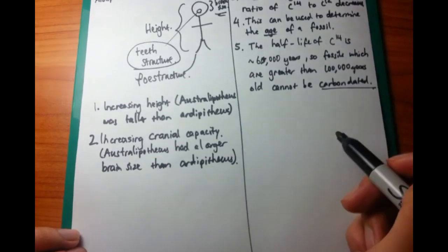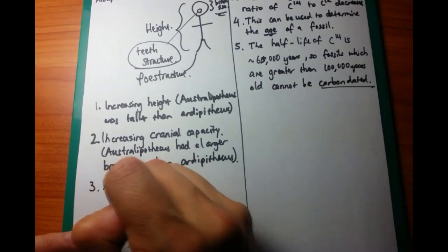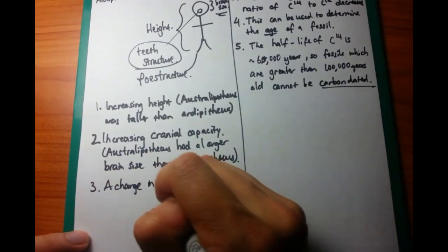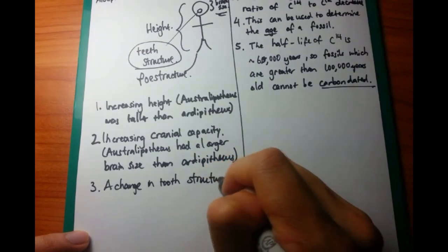So, thirdly, we're going to talk about tooth structure. And most modern day people now are omnivorous, so they eat both plants as well as meat. However, previously with Ardipithecus, it wasn't so.